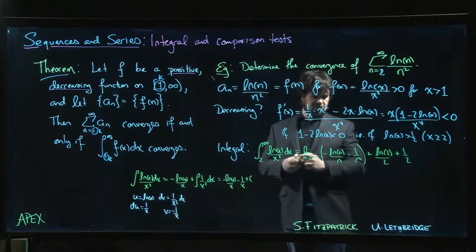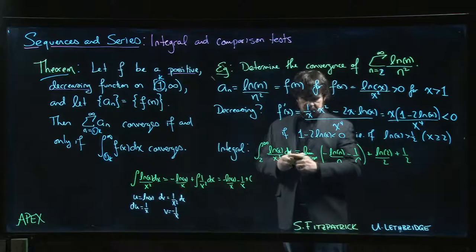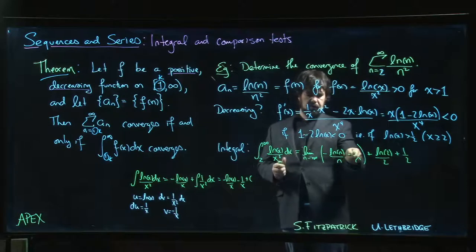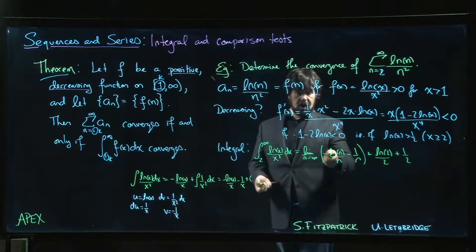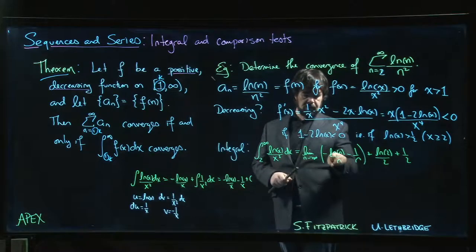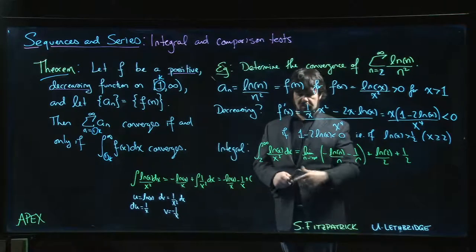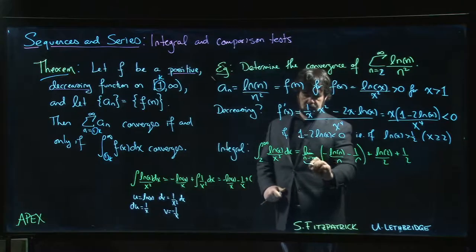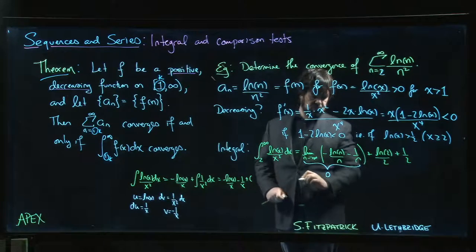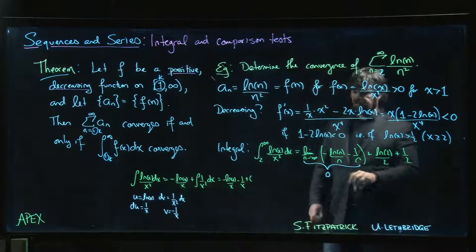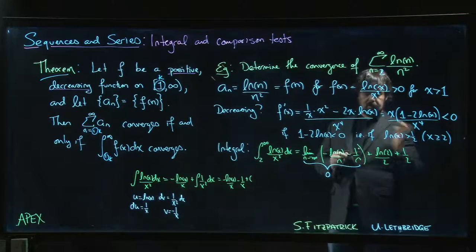And we just check now that this limit here is 0. Certainly that goes to 0. One application of L'Hopital's rule tells you that that one goes to 0, because the derivative of the top gives you the 1 over n, derivative of the bottom gives you 1. And so we know that that limit is just 0. So we get this finite value for the integral. Integral converges.